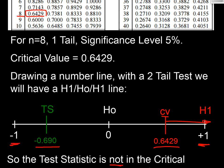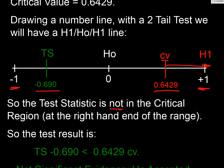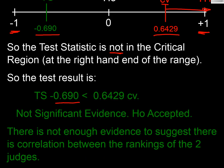So if we wrote out the whole thing, our test statistic of minus 0.690 is less than our critical value, so it's not significant evidence, so our H0 is accepted, and we're going with there is not enough evidence to suggest that there is correlation between the rankings of the two judges. So a bit of a waste of time, this competition, isn't it, if you can't trust the judges?